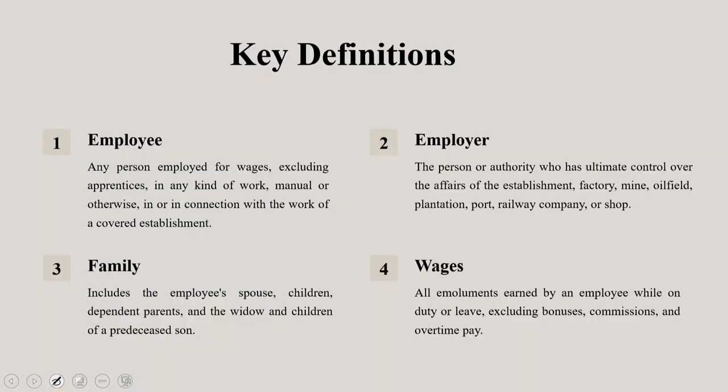To understand the Payment of Gratuity Act, you have to understand what different words mean. These could be functional words whose comprehension is critical when you proceed further with the act. The first is employee, second is employer, third is family, and fourth is wages.